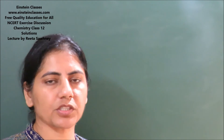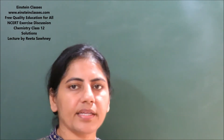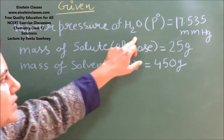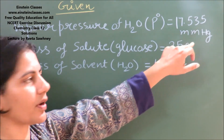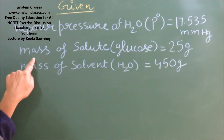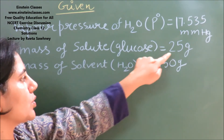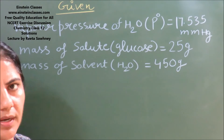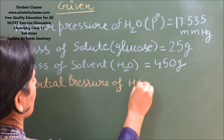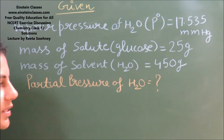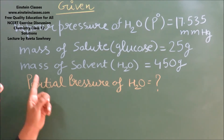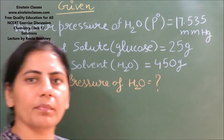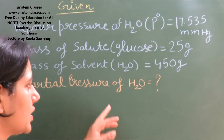It means we need to find out the partial pressure of the water. So firstly we are writing what is given to us. We have the vapor pressure of pure water, P0, which is 17.535 mmHg. The mass of solute, that is glucose, is 25g, and the mass of solvent, that is water, is 450g. We need to find out the partial pressure of water — that is the vapor pressure of water in the presence of glucose. This is our aim.